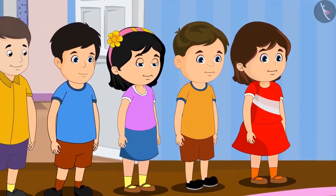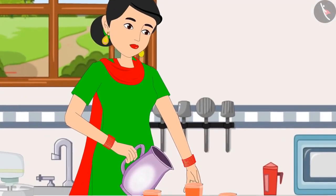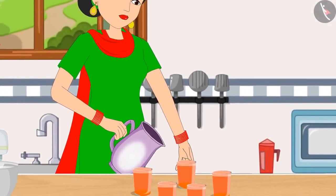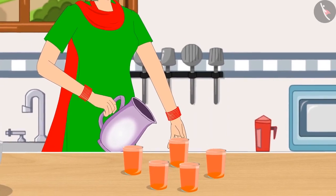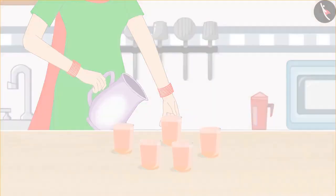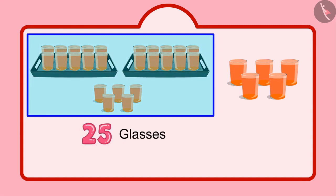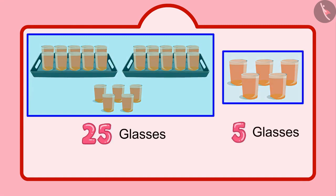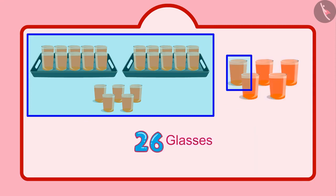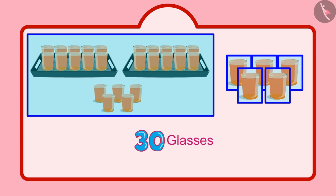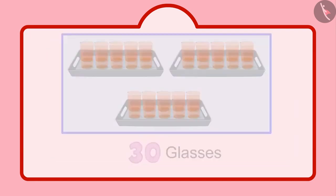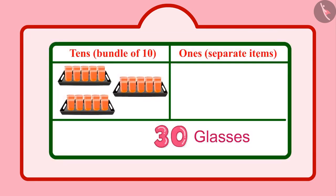After some time, some more friends of Chotu came home, and Chotu's mother made more sherbet for them. Chotu distributed a total of 25 glasses of sherbet, and after that 5 more glasses. So that makes it 26, 27, 28, 29, 30. That means 30 glasses. So, children, in 30, there are 3 tens and 0 units.